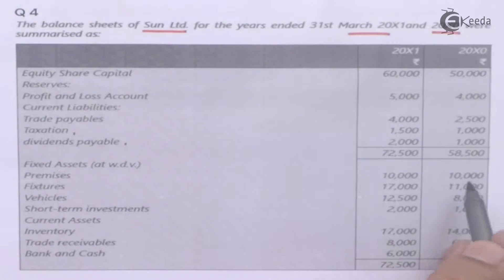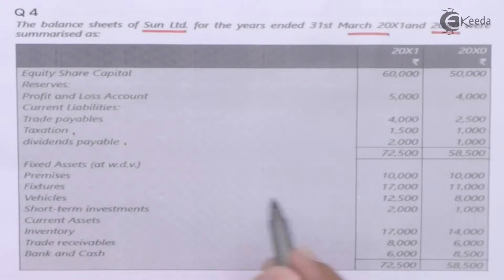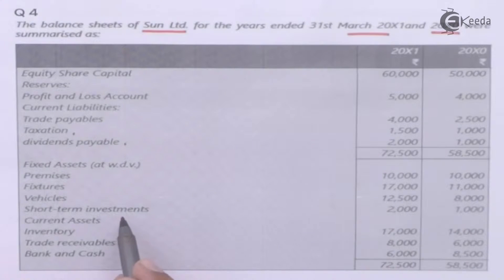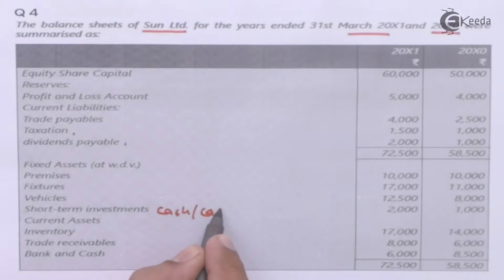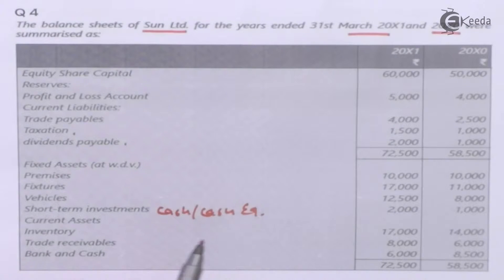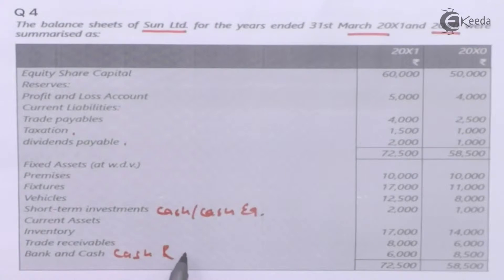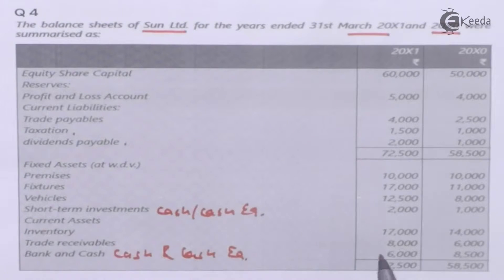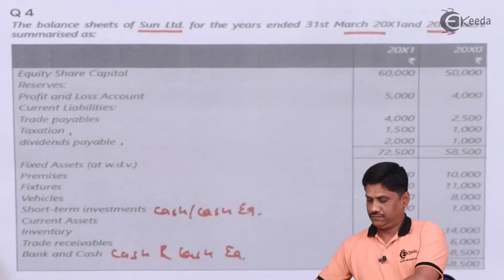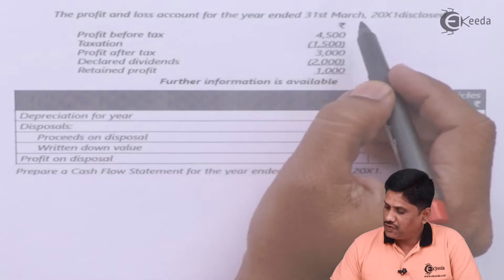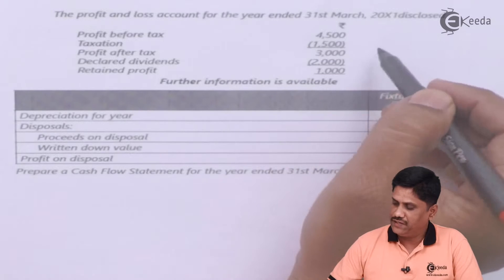Fixed assets given: premises — there is no change; furniture/fixture — there is a change; vehicle — there is a change. Short-term investment is your cash and cash equivalent. Current assets include inventory, trade receivable, and bank and cash. For us, current assets will include cash and cash equivalent.